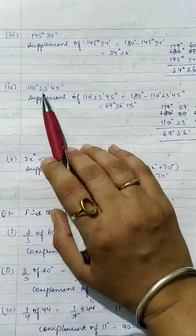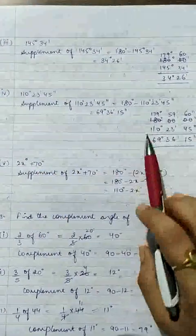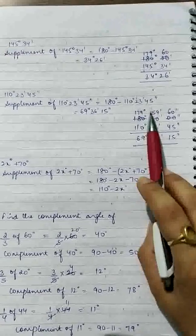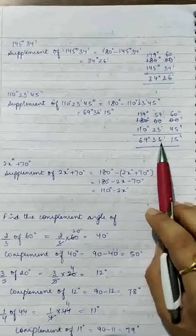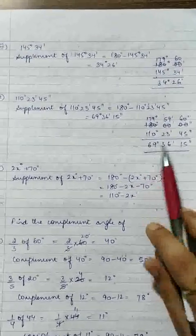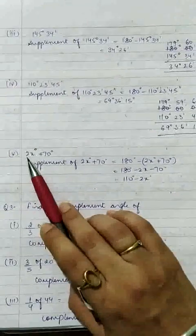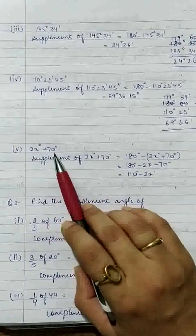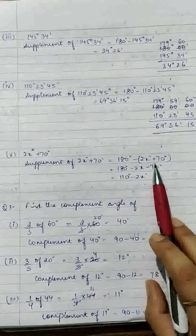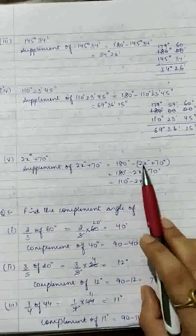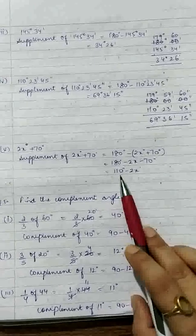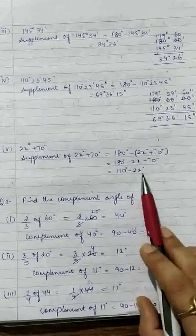Supplementary of 110 degrees 23 minutes 45 seconds. Subtracting: 60 minus 45 is 15 seconds, 59 minus 23 is 36 minutes, and 179 minus 110 is 69 degrees. Answer: 69 degrees 36 minutes 15 seconds. Last part: supplement of (2X + 70) degrees is 180 minus (2X + 70), which gives 110 minus 2X.